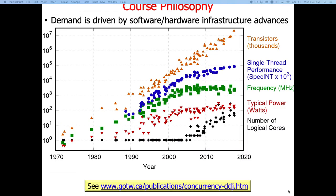Moore's law continues with respect to transistor count — doubling every 18 to 24 months — but chip speeds have leveled off over the past two decades. The number of cores keeps increasing because they have all those transistors. As a consequence, you can't just wait for the next chip generation to make your program run faster; you have to figure out how to program these cores effectively.